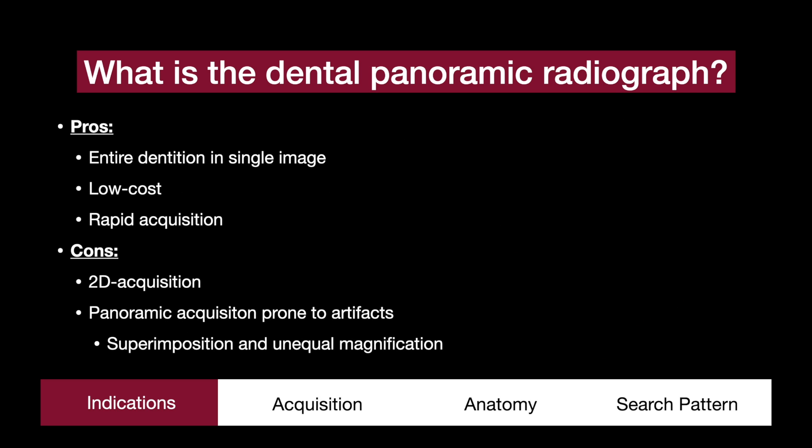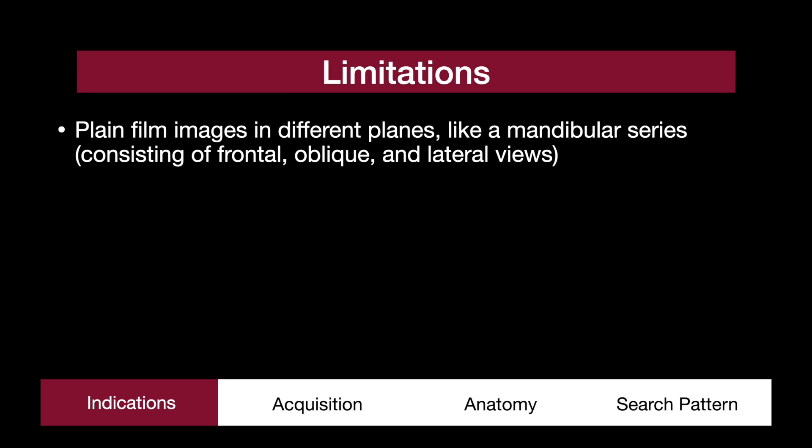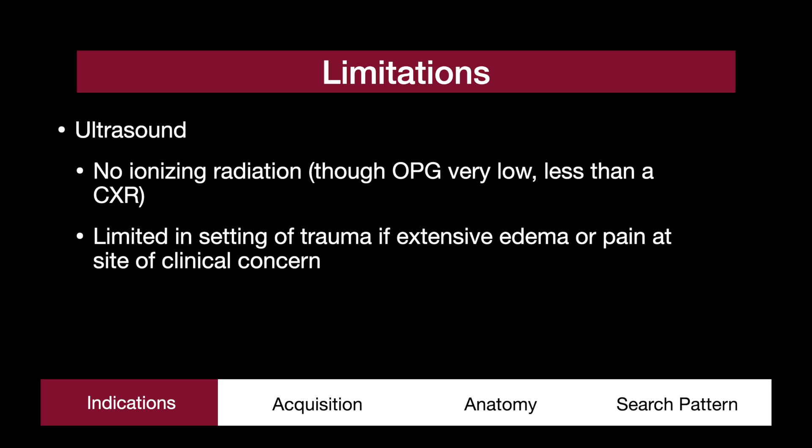The advantages of a dental panorex are visualizing the entire dentition in a single image, and its low cost and rapid acquisition. That said, the panoramic acquisition is prone to substantial artifacts, like superimposition or unequal magnification. Occasionally, plain films in different planes, like a mandibular series, may be needed. Another alternative is the ultrasound — while there is no ionizing radiation, ultrasound is limited if there is extensive edema or pain at the site of clinical concern.